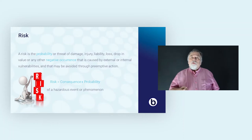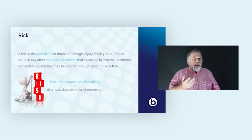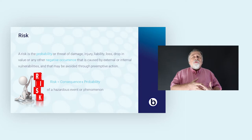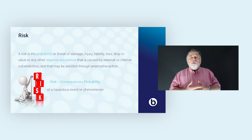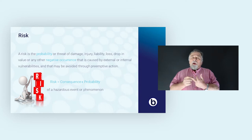We first start with having a look at risk. Risk is the probability of a threat, injury, liability, loss of quality, or any other negative occurrence that can be caused by internal or external vulnerabilities that could be avoided by a preemptive action. So risk is the product of consequences and the probability of a harm or a hazardous event or phenomenon.